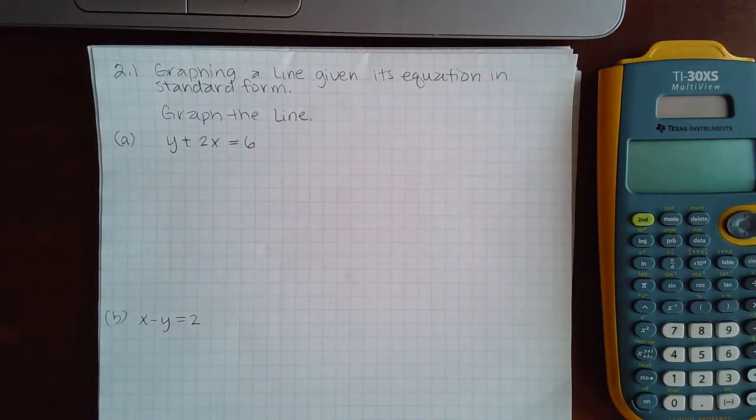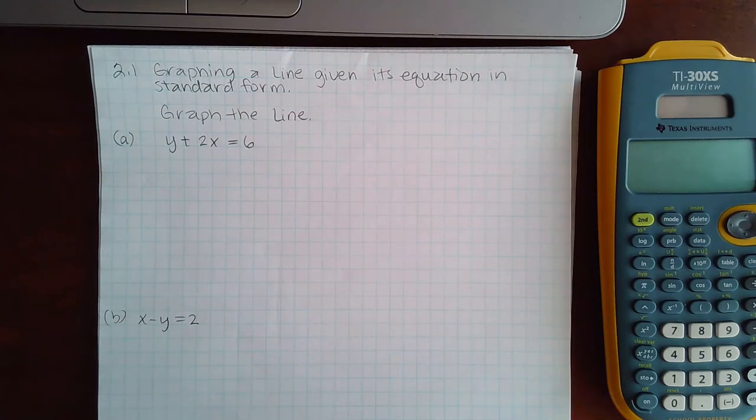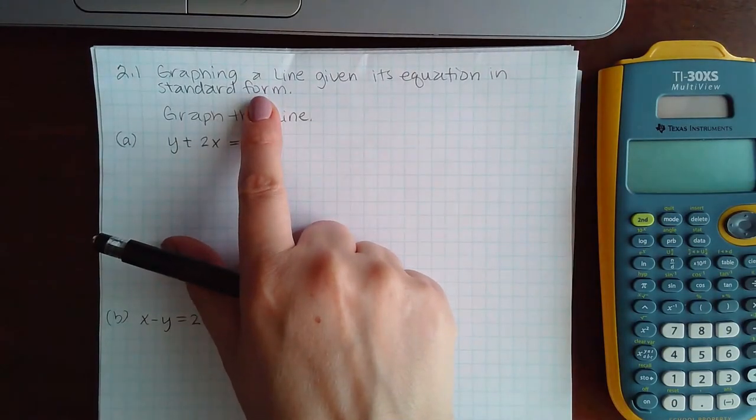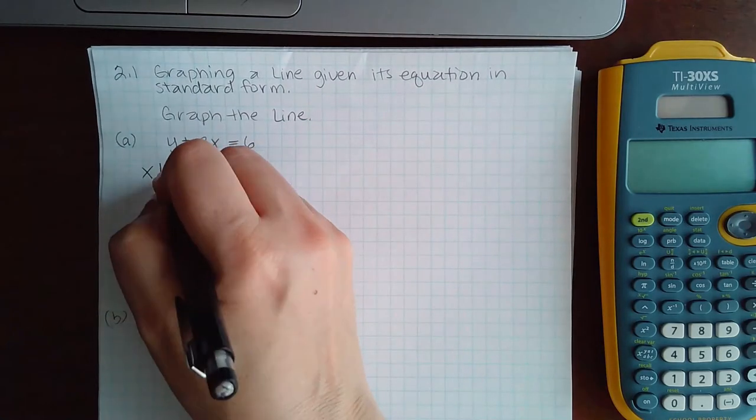Here we're doing 2.1 graphing a line given its equation in standard form. So really there's nothing different here. You could solve it to put it into the other form as it was before but it's not necessary. When it's written in standard form though, this is important, when it's written in standard form I still pick 0.